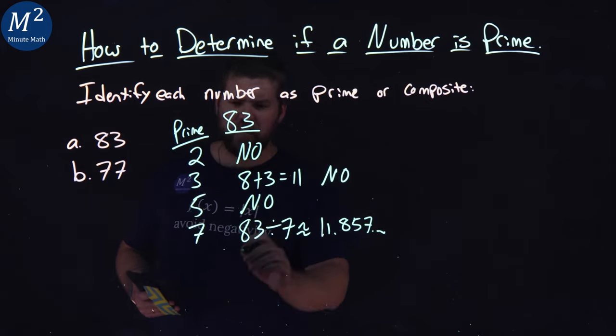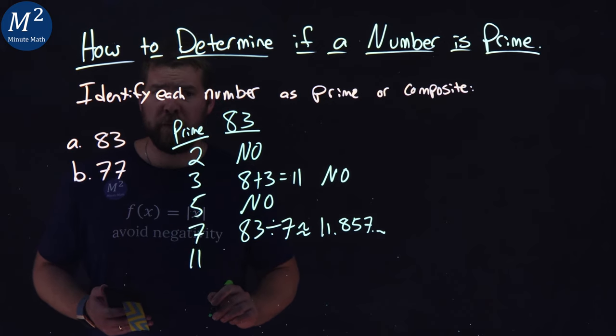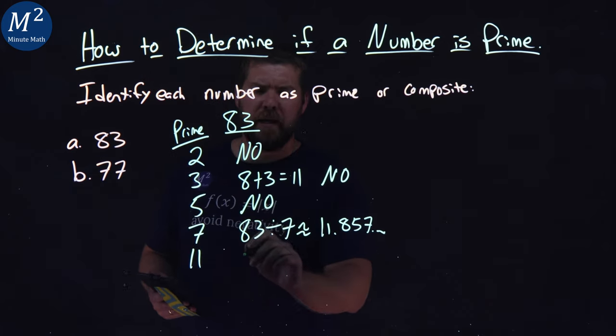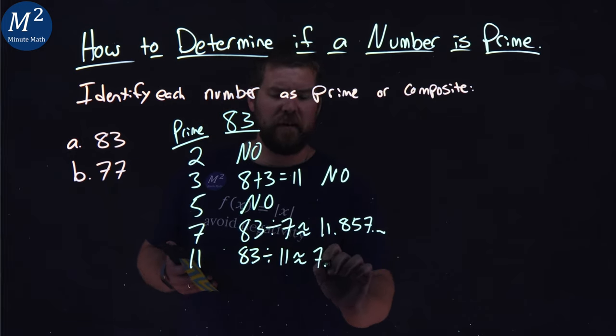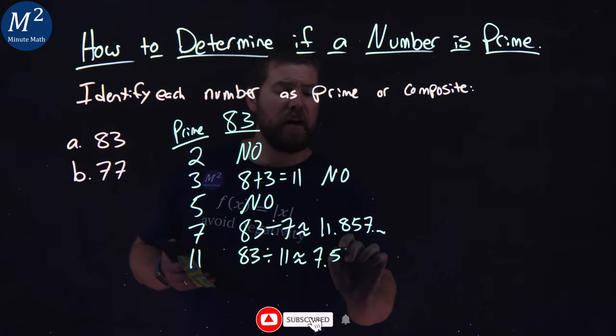Next prime number is 11. Does 11 go into 83? So 83 divided by 11. That comes out to be 7.545.